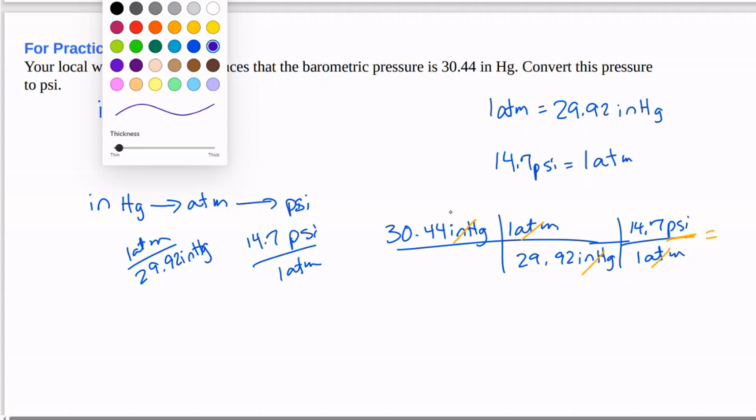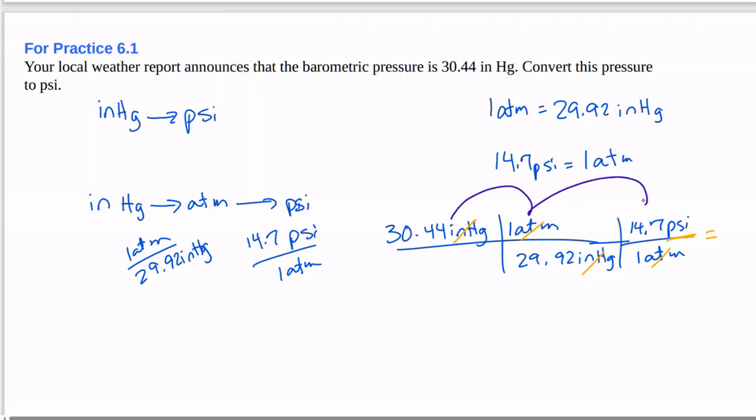So we're going to multiply 30.44 times 1 times 14.7. And then we would multiply 29.92 times 1, then divide the top by the bottom. So I'm just going to give the final answer here. That's 15.0 PSI.